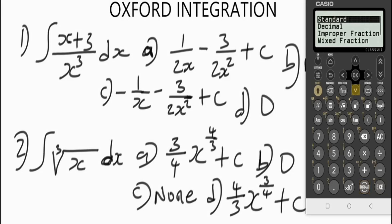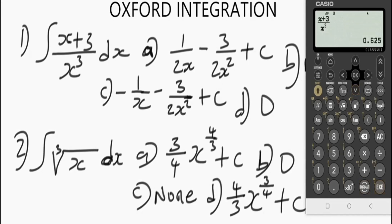So 5/8 is the same as 0.625. We are now going to differentiate the options — whichever option gives us 0.625 will be the answer to this question. To bring up the derivative symbol, press the catalog button.